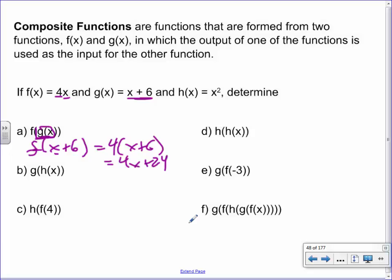Why is it 4x + 24? You see how f(x) on its own is supposed to be 4 times x. But here, f means 4 times something — and we're not doing 4 times x, we're doing 4 times g(x). Since g(x) is x + 6, we basically quadruple the x + 6, giving 4x + 24.